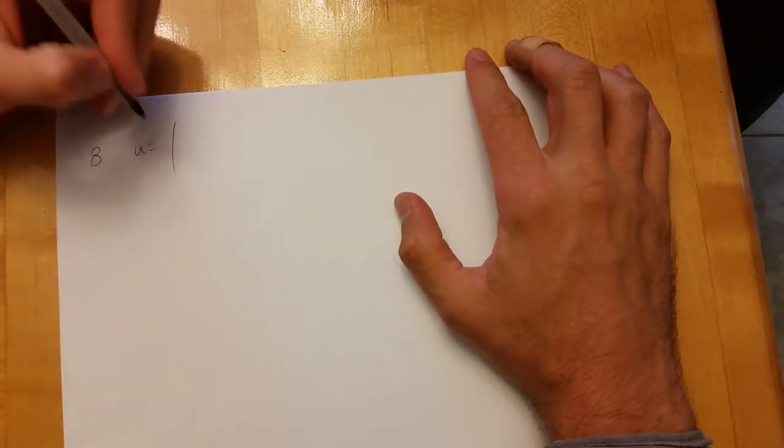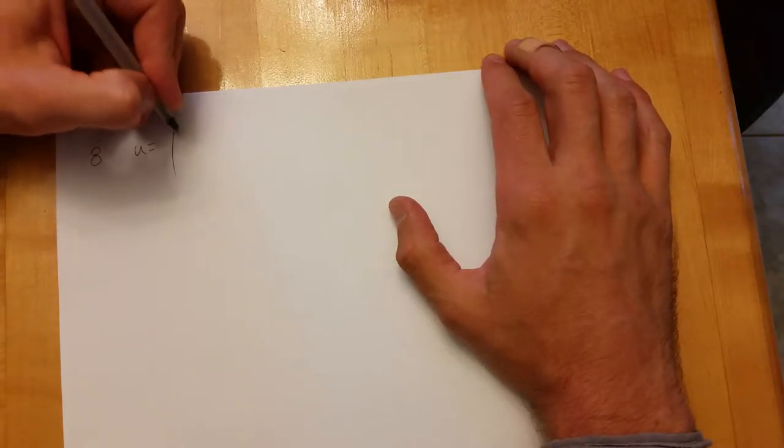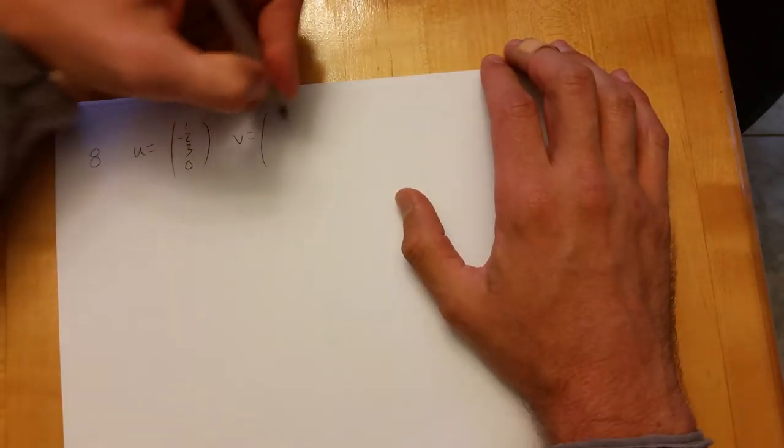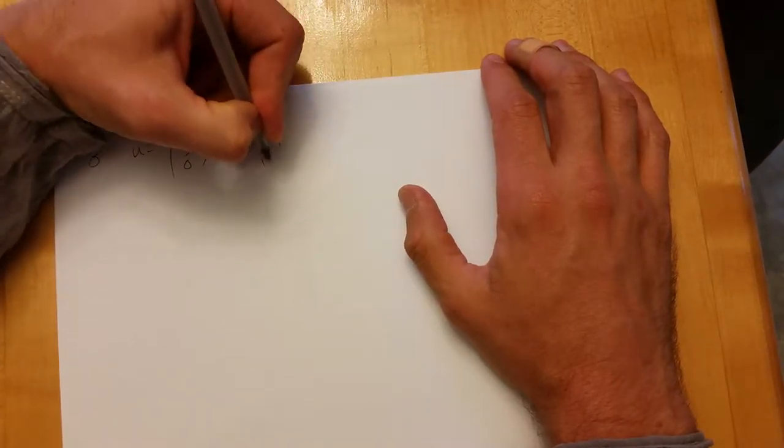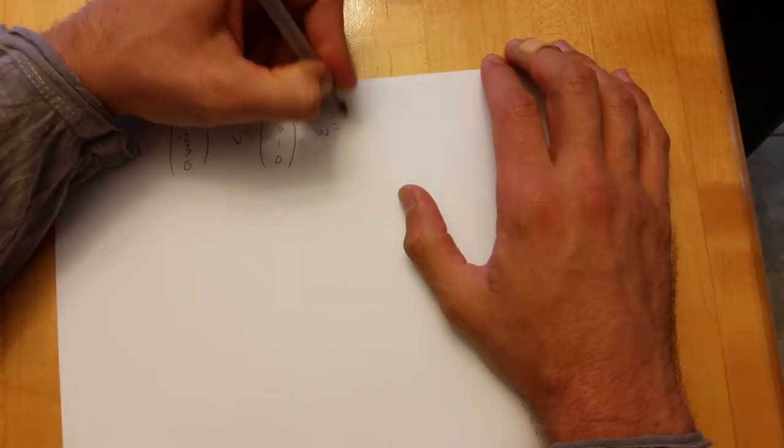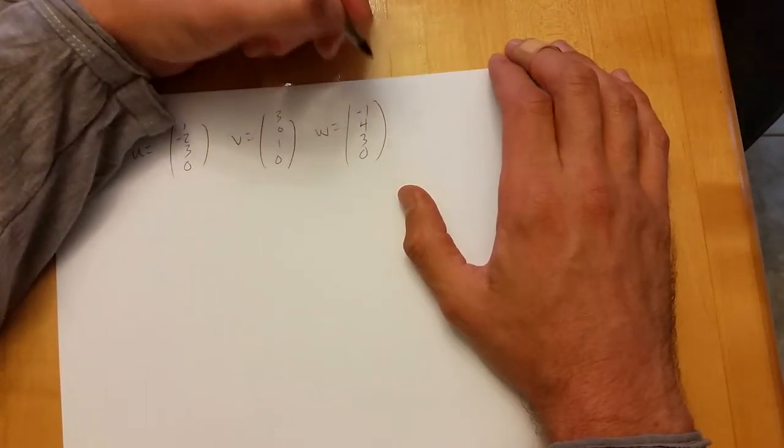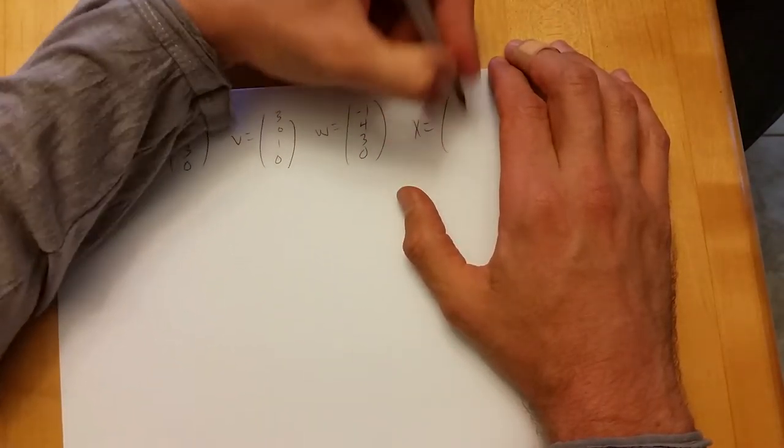So we're going to try to span R4 with the u, v, and w we had before: one negative two three zero, and we use X as our last one.